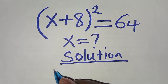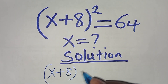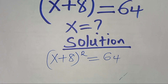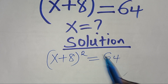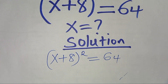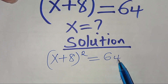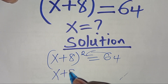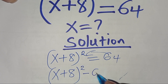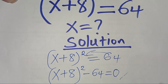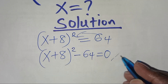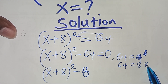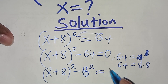For the solution, we have x plus 8 raised to the power 2, equal to 64. We can solve this algebra problem applying two methods. Let's start with Method 1. We take 64 to the left-hand side, so we have x plus 8 raised to the power 2, subtract 64, equals 0. We can express 64 as 8 times 8, which is 8 to the power 2, giving us x plus 8 to the power 2, minus 8 to the power 2, equals 0.